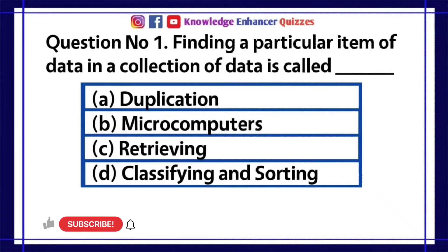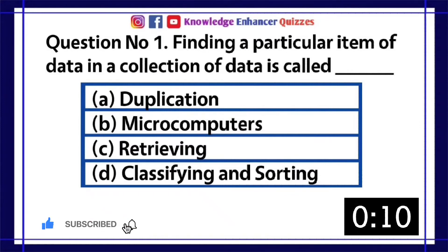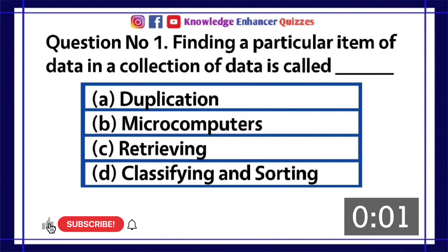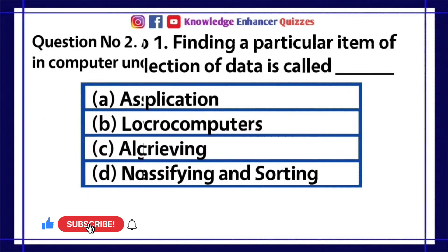Question number 1. Finding a particular item of data in a collection of data is called dash. A. Duplication. B. Microcomputers. C. Retrieving. D. Classifying and sorting. Option C is the right answer.